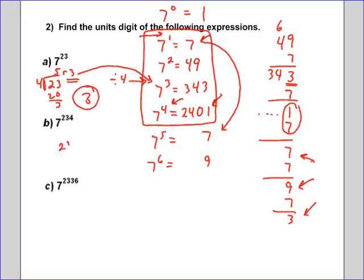Do 234. 234 divided by 4. Well, just go through and do the division by hand. So you get a remainder of 2. And a remainder of 2 is this one, which gives me a units digit of 9. So the answer is 9. The units digit of 7 to the 234th is 9.